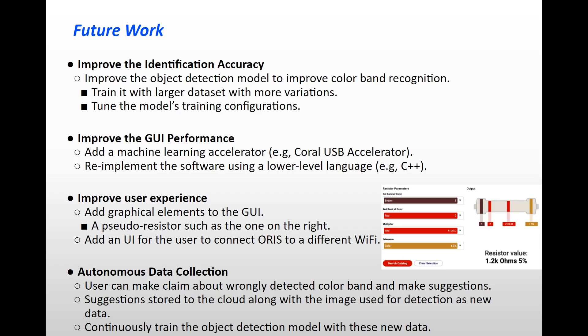In addition, we have mentioned our GUI is heavily text-based, so we need to improve user experience. We can add graphical elements to help the user quickly interpret the identification results on the ORIS, hence greatly increasing the user's efficiency at using the ORIS. For example, the pseudo-resistor such as the one on the right, which is graphical resistor image with the highlighted band that shows in the result UI will aid the user in reading and verifying. As well, there is currently no way to change ORIS Wi-Fi connection via its UI, but it should be implemented to allow the user to more easily change to a different wireless network.